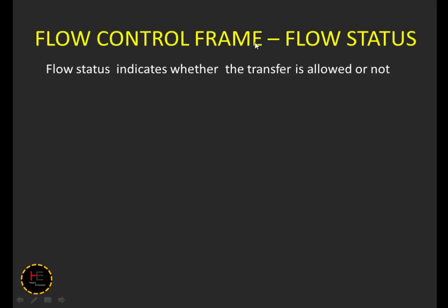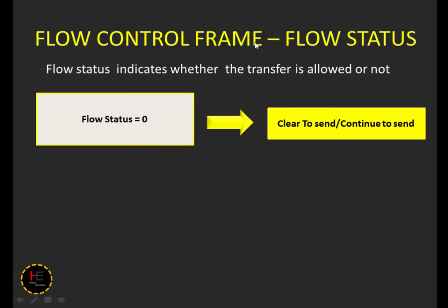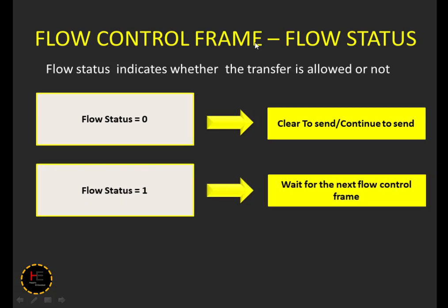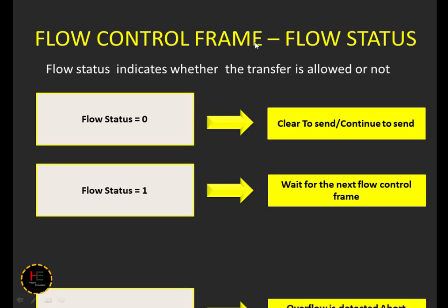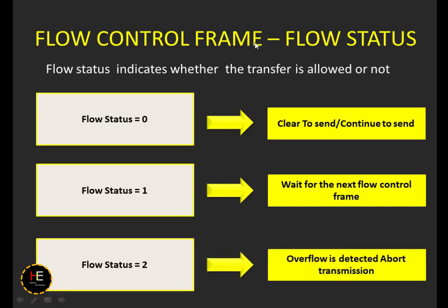Let's check the possible values of flow status. Flow status indicates whether the transfer is allowed or not. If it is zero, it means clear to send — there are no issues in the multi-frame transmission. If flow status equals one, a flow control frame must be sent before sending the next consecutive frame. If flow status is two, there is not enough space in the ECU, so the CAN multi-frame transmission is aborted.